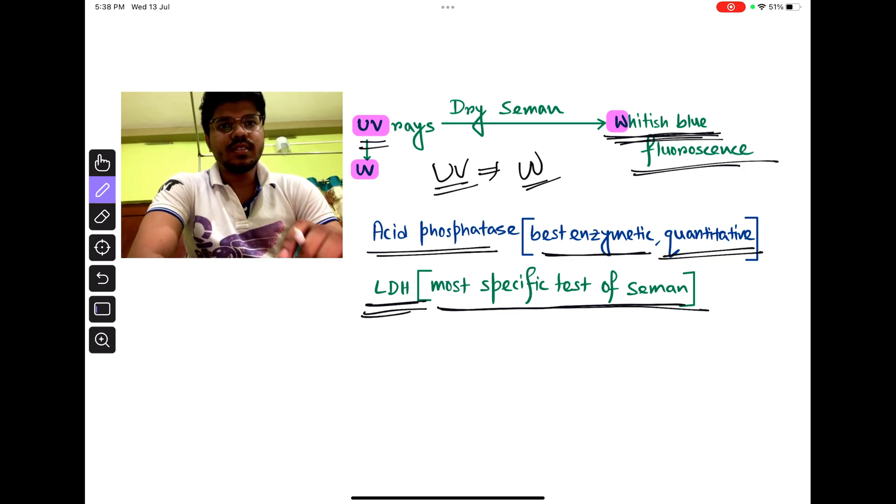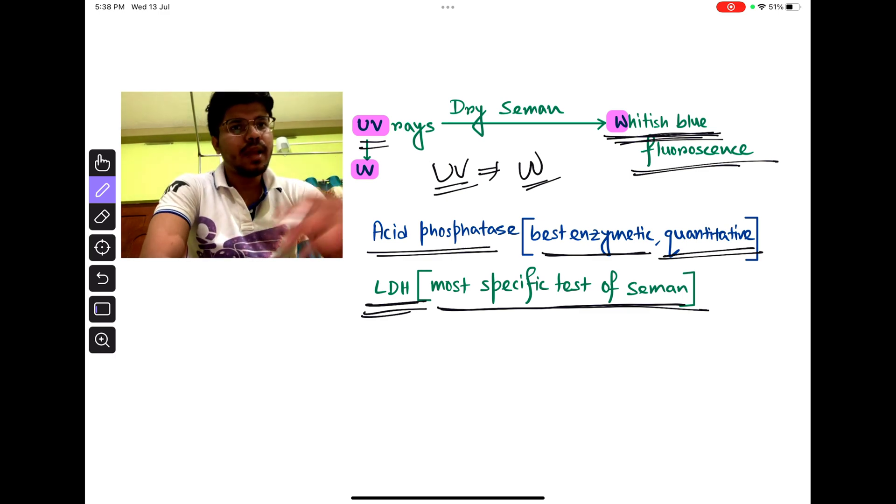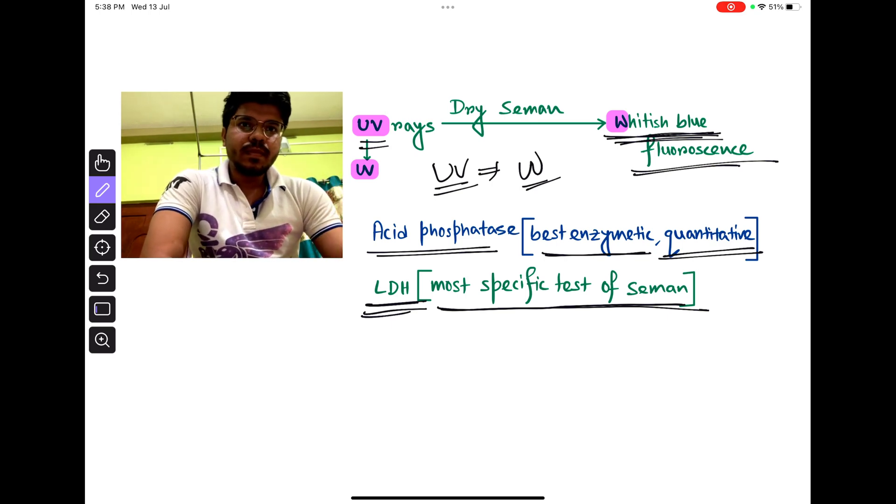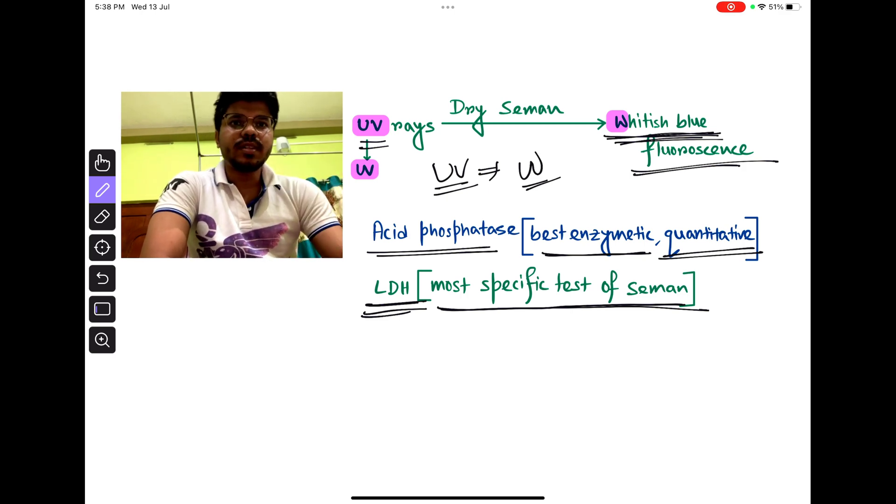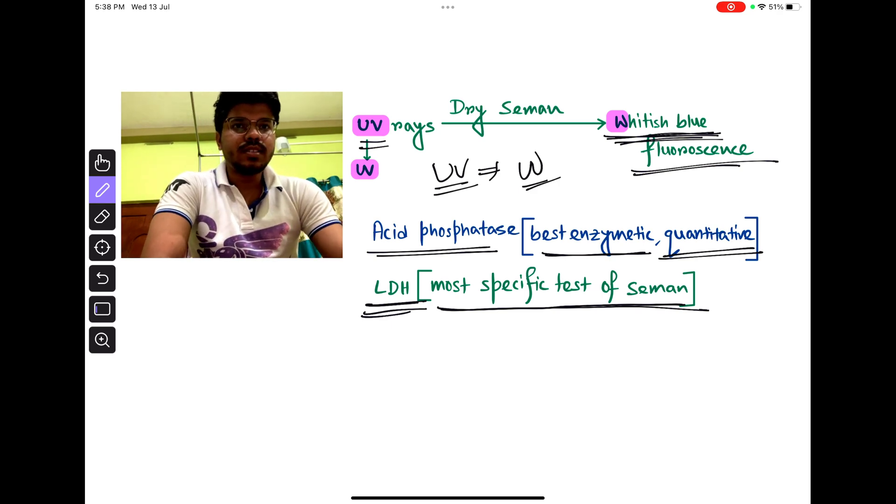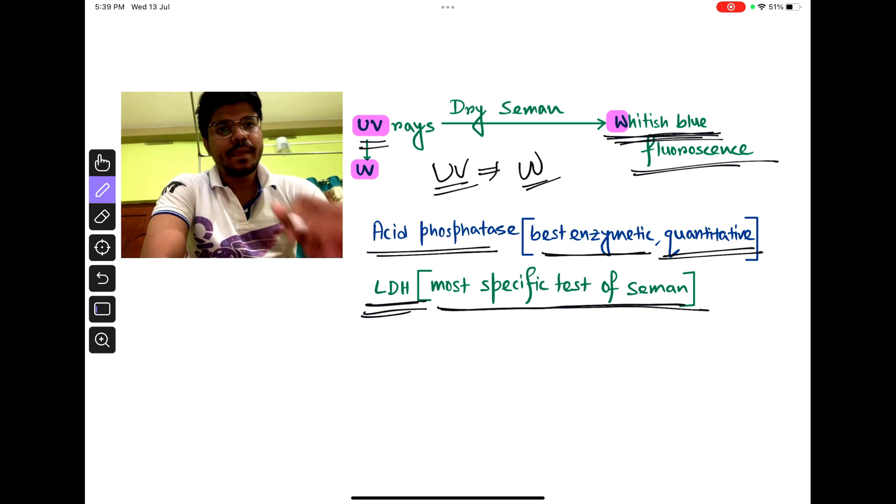A quick recap. Seminal stains can be examined by several tests. In Barbaryose test, Sparmin can be examined and there is yellow needle shaped crystal. In Florence test, Colline is examined and there is brown rhombic shaped crystal. In UV rays, seminal stains are whitish blue. Acid phosphatase test is the best enzymatic test and it is a quantitative test. And LDH is the most specific test.